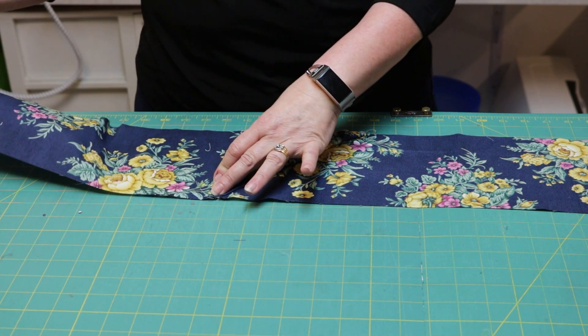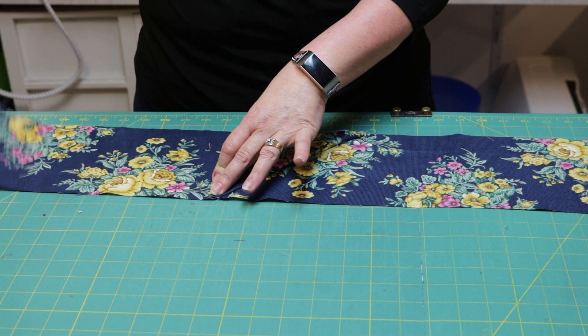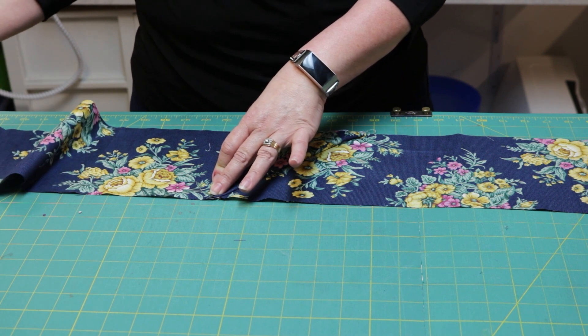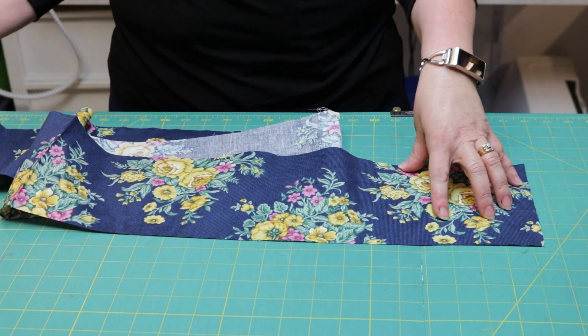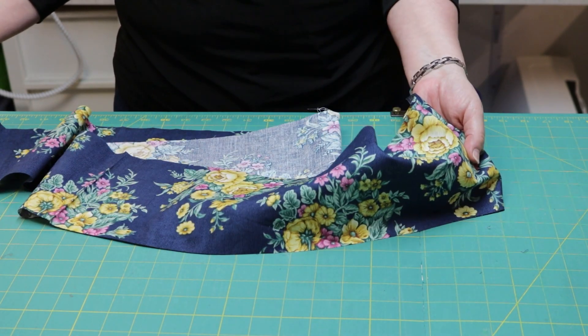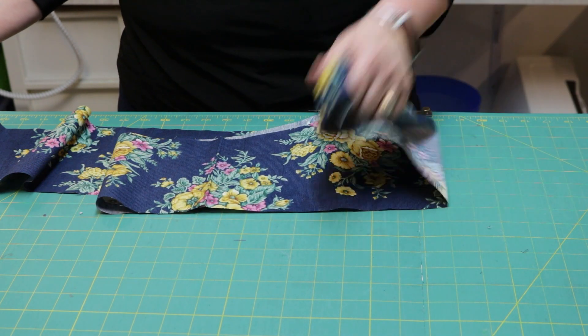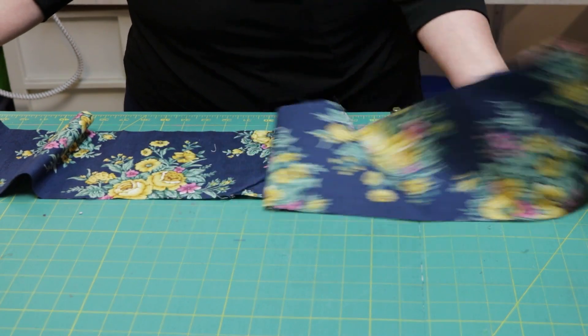So strip two is only 34 inches long instead of 40. When I join a strip to the other end of strip one, it's only going to be 34 inches as well. So when we do our calculations, we'll take that into account.